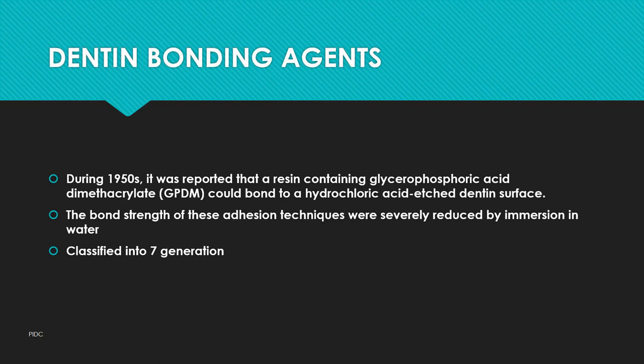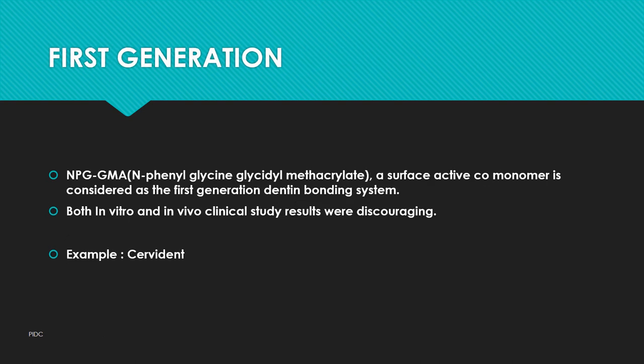Bonding agents also include etchants, resin monomers, solvents, initiators, inhibitors, and fillers. Bonding agents are classified into generations. First generation uses n-phenylglycine glycidyl methacrylate, a surface-active co-monomer considered as the first generation dentin bonding system. Both in vitro and in vivo clinical studies showed very discouraging results. Example: Sevitron.